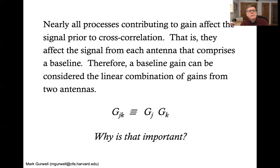So nearly all processes contributing to the gain effect happen prior to cross-correlation. That is, they affect the signal from each antenna as opposed to pairs of antennas differently. Therefore, a baseline can be considered the linear combination of gains from two antennas. So if you have antenna J and antenna K, they make a baseline JK, but the gains can be broken down into antenna-based gains. So why is that important?